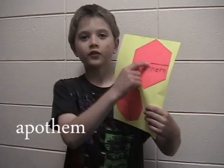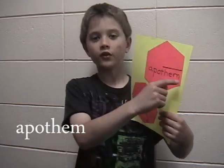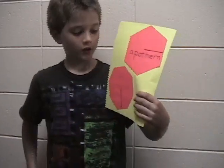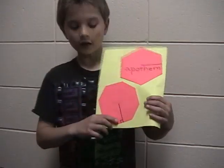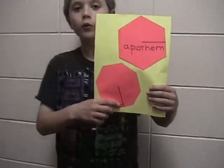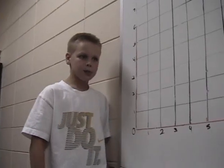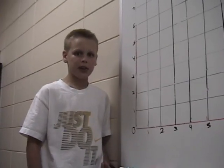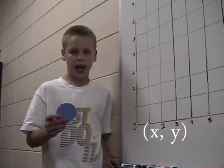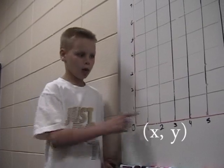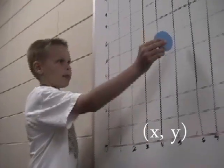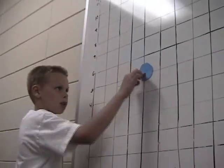The apothem goes from the center to the side — it makes a right angle and that's bonafide. X comes first, Y when you're plotting the dot — that's over then up, then you plot.